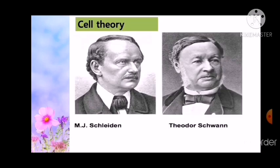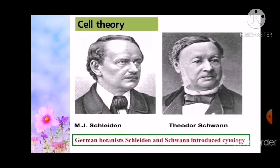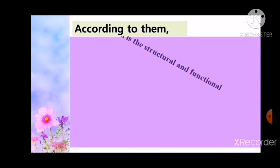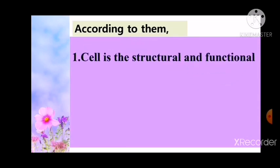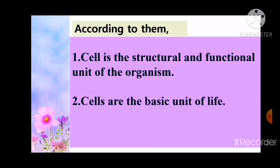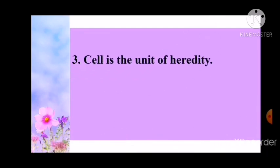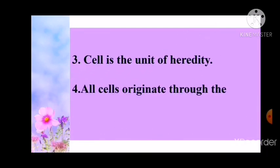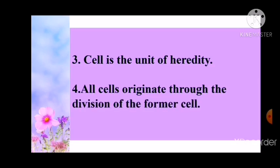Cell theory. German botanist Schleiden and colleagues introduced cytology. According to them, the cell is the structural and functional unit of the organism. Cells are the basic unit of life. The cell is the unit of heredity. All cells originate through the division of a former cell.